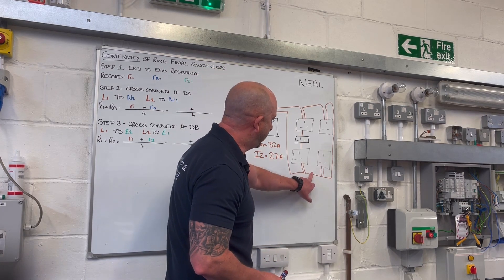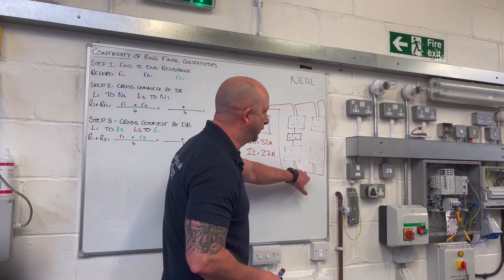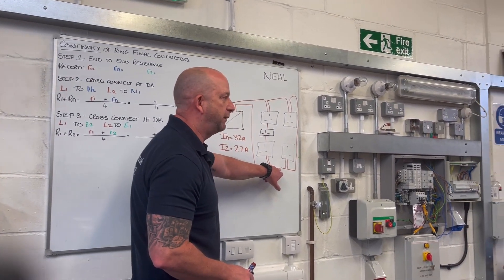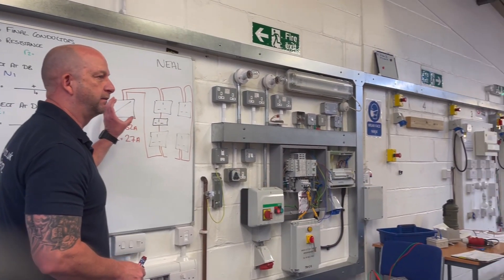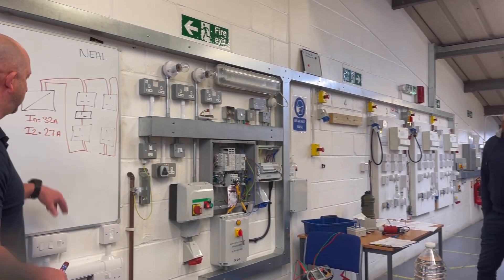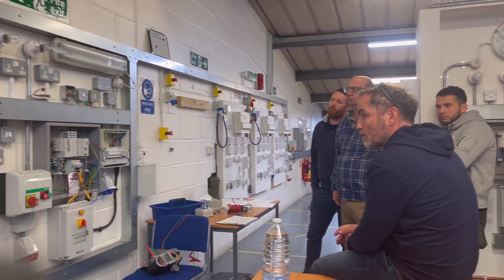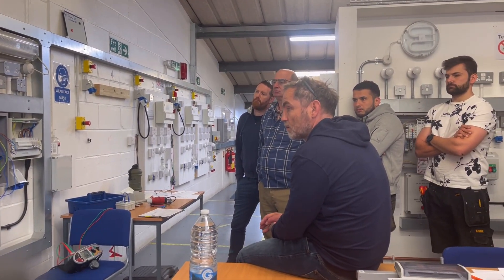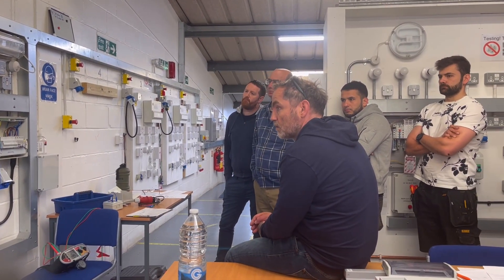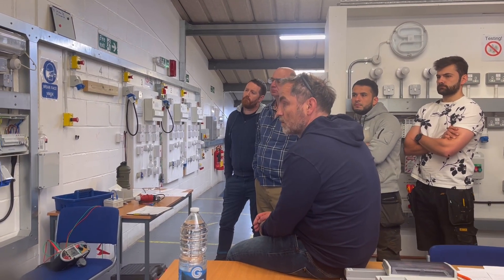Because if we go back to that first scenario and we've got a broken conductor, are we necessarily going to know about that? No. It could be hidden, couldn't it? Because your continuity tester will just measure through the interconnection. So we've got an issue there, haven't we?